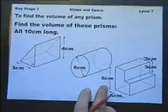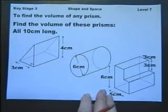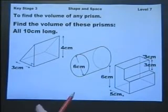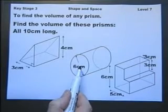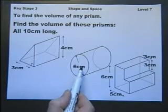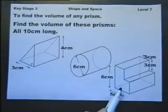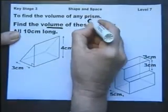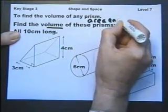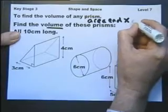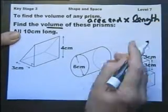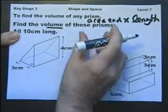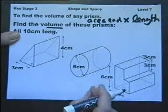To find the volume of any prism—this is a triangular ended prism, this is a circular ended prism otherwise known as a cylinder, and this is an L-shaped ended prism—and the volume of any prism is exactly the same formula. It's the area of the end of the prism multiplied by how long the prism is, or if the prism was standing upright, it would be the area of the end times the height.